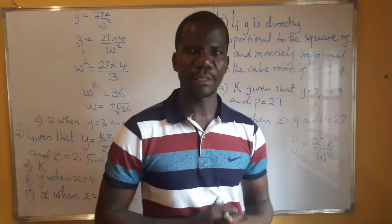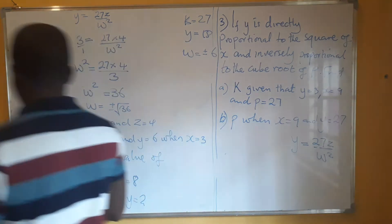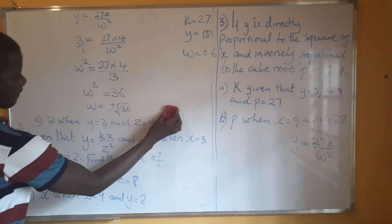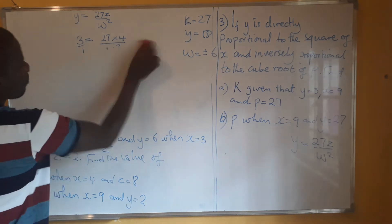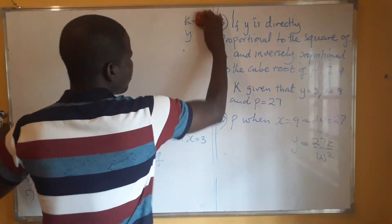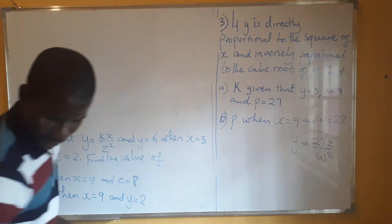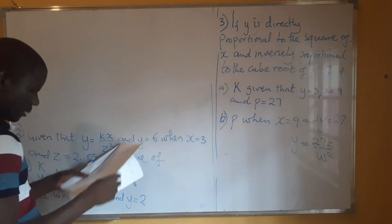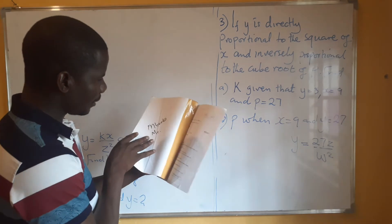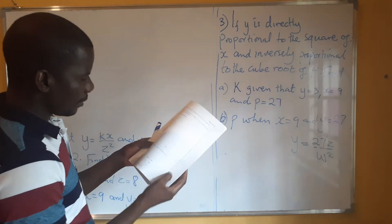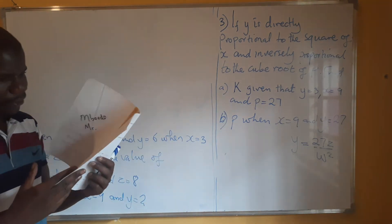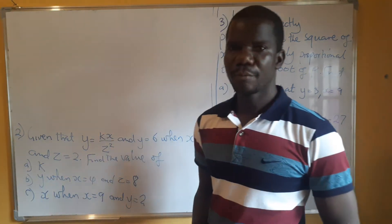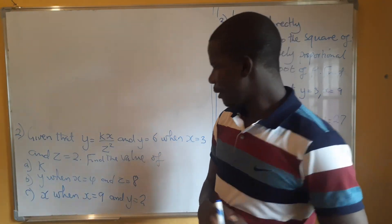So W equals plus or minus 6 — the square root of 36. That is what we are going to get. So we are done with the first question. If you have the past papers, you will be able to see that this question has come from a specimen paper, around 2016 or so.